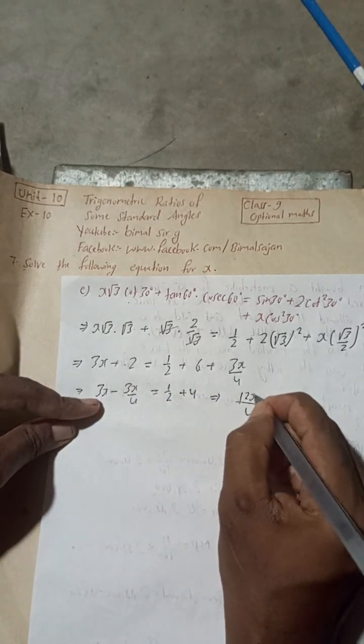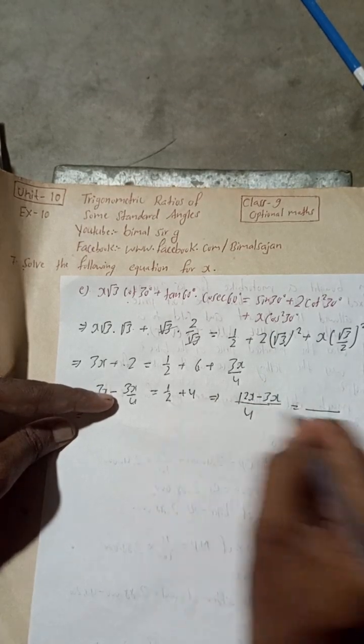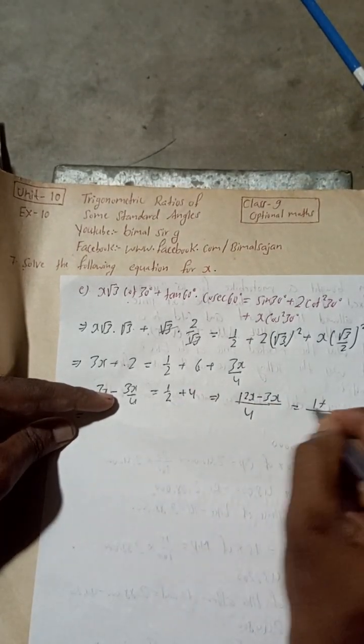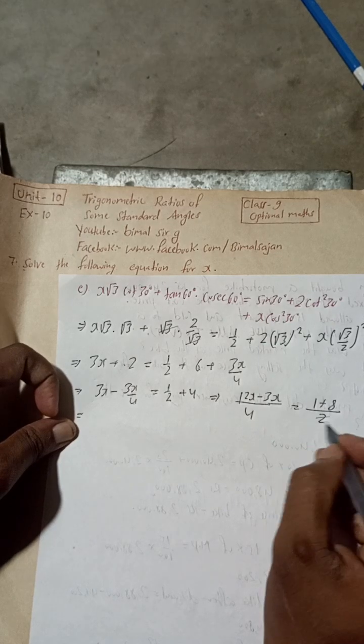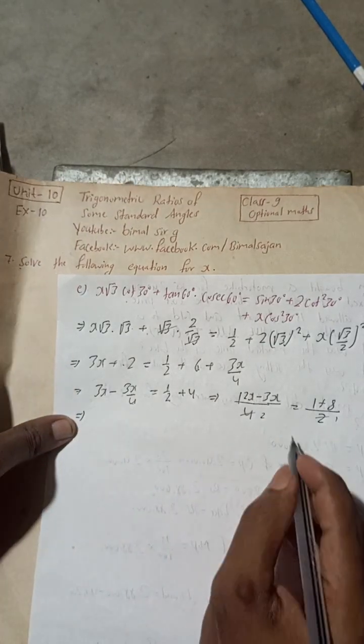4 threes are 12x minus 3x. Here 2 is LCM, so 1 plus 4 times 8 by 2. This 2 ones are 2, and 2 twos are 4.